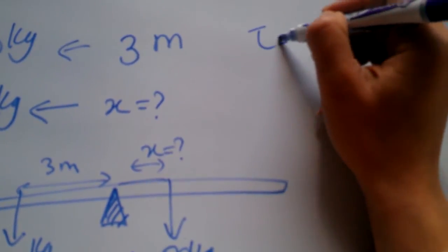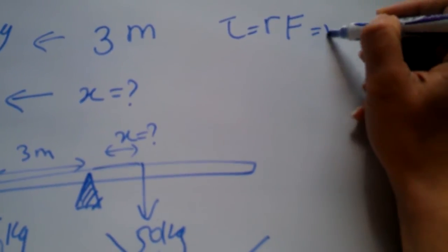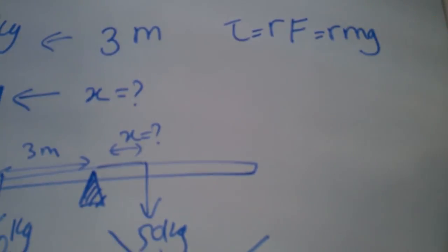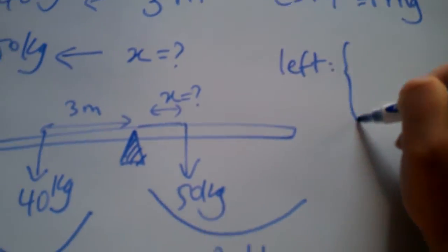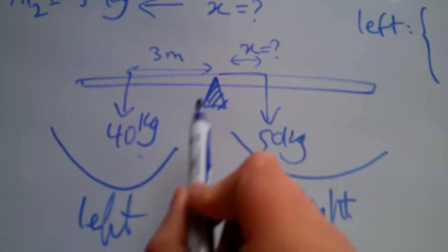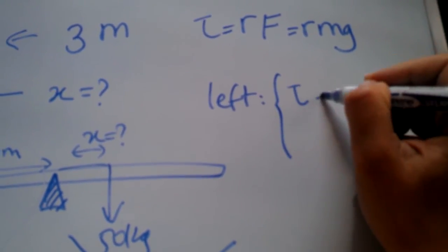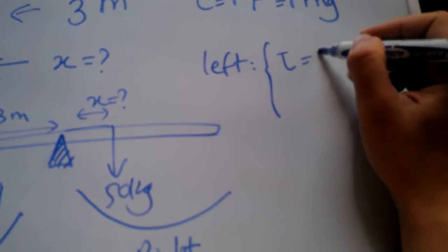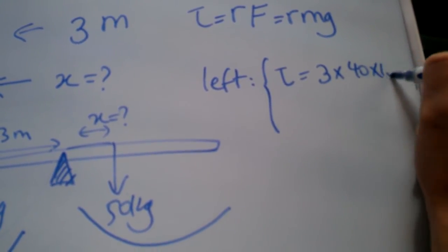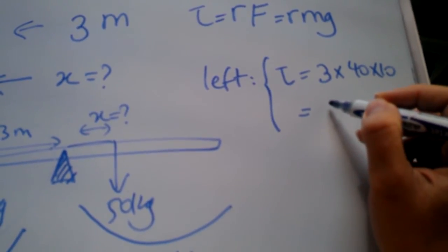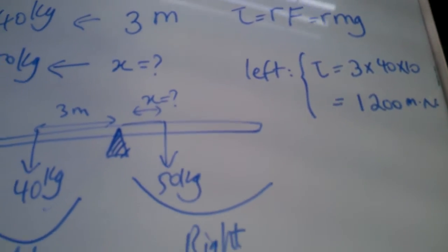These are the masses, but for torque we need the force of mg. So we are given the m's but we need mg because torque is lever arm times the force. Our force now is mg, right? So left torque, this part of the pivot point, is r which is three meters times 40 times 10, and that gives us 1200 meter-newtons of torque.